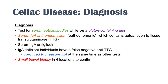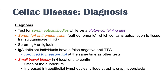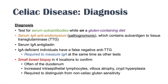Diagnosis must be confirmed through small bowel biopsies, usually in four locations — most often in the duodenum. Biopsy findings in celiac disease include increased intraepithelial lymphocytes, villus atrophy, and crypt hyperplasia. This biopsy is required to distinguish celiac disease from non-celiac gluten sensitivity. Suspect celiac disease when there is weight loss with recurrent chronic diarrhea, signs of malabsorption, or iron deficiency anemia — especially in young male patients.